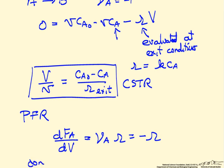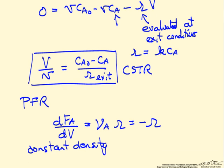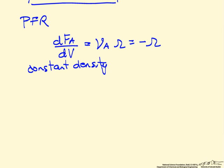If we assume constant density so we can compare to the CSTR, then the molar flow rate is a volumetric flow rate times a change in concentration with volume equals minus R. If we want to determine the volume over the volumetric flow rate, we can rearrange this equation.